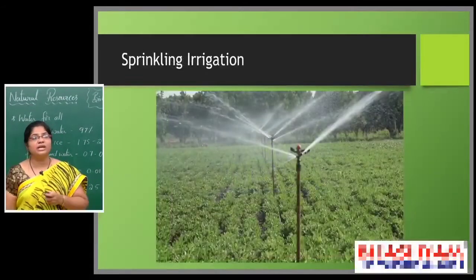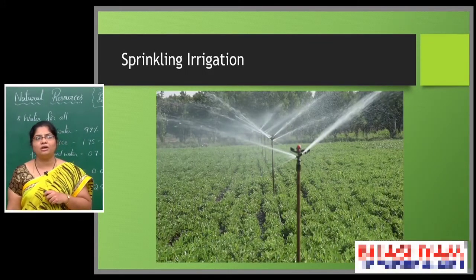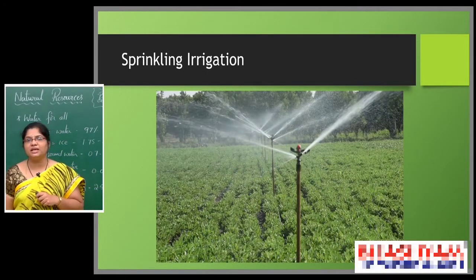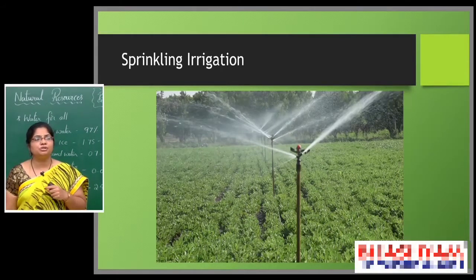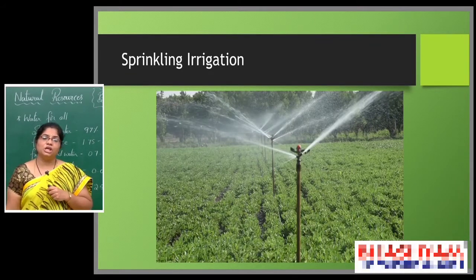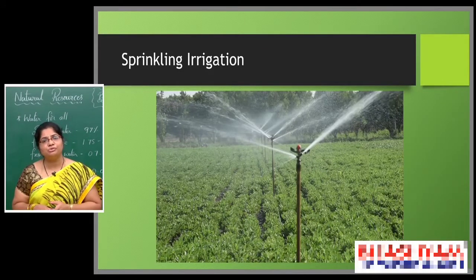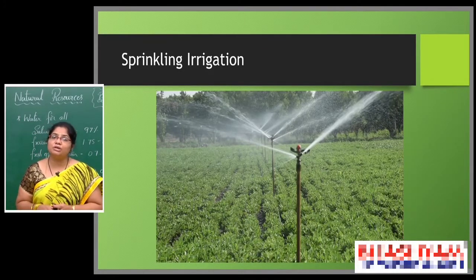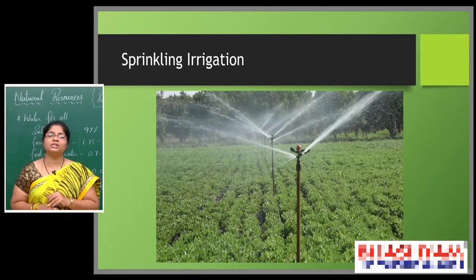Another micro irrigation process that helps a lot is sprinkler irrigation. In the sprinkler irrigation process also we are able to get more benefit, and it also helps to save water. Farmers should move towards such micro irrigation techniques.